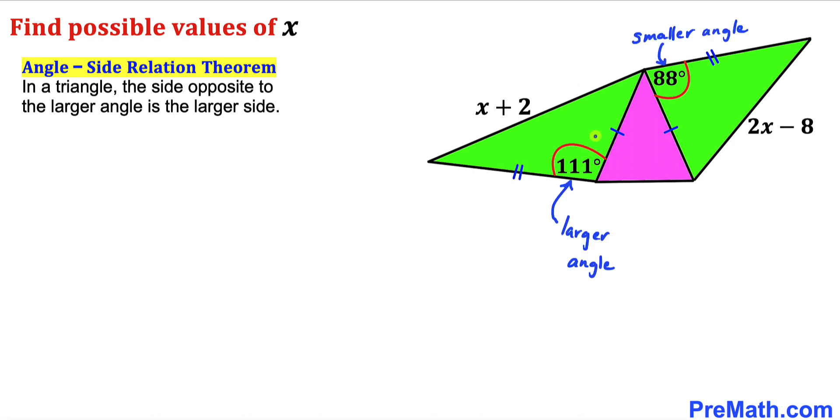And now we can see that 111 degrees is our larger angle. So therefore the side opposite to this angle is going to be the larger side.